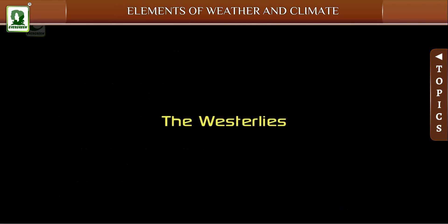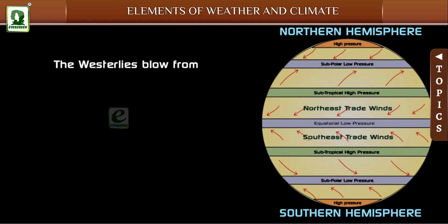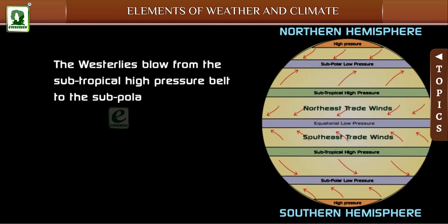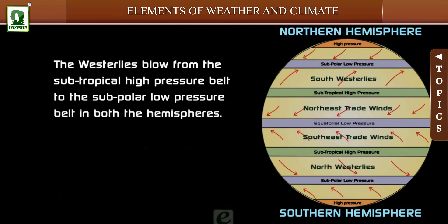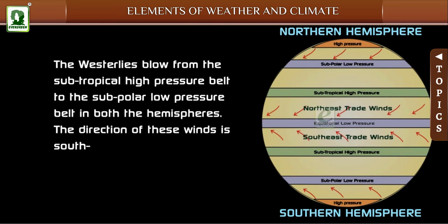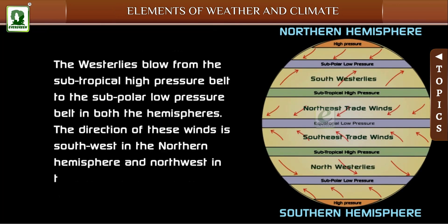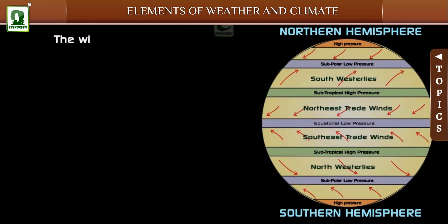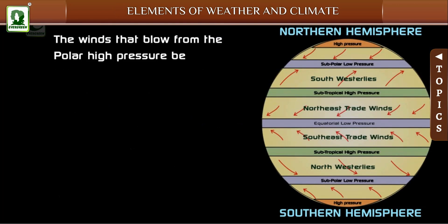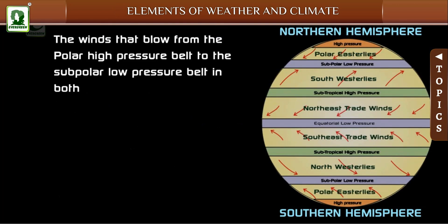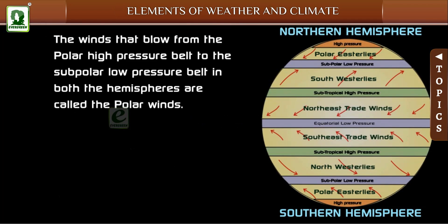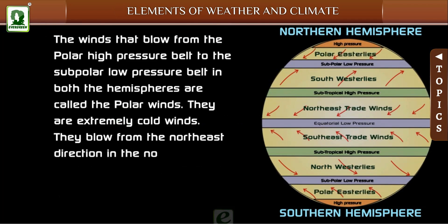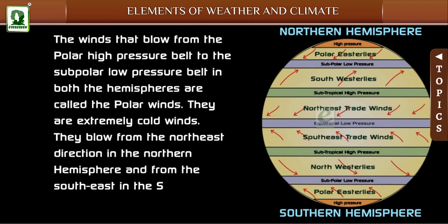The westerlies blow from the subtropical high pressure belt to the subpolar low pressure belt in both hemispheres, from the southwest direction in the southern hemisphere. The polar winds blow from the polar high pressure belt to the subpolar low pressure belt in both hemispheres; they are extremely cold winds, blowing from the northwest in the northern hemisphere and from the southeast in the southern hemisphere.